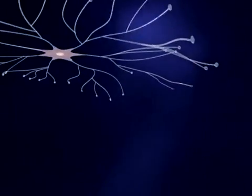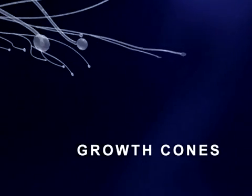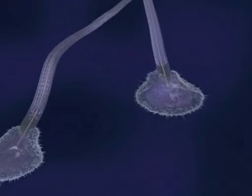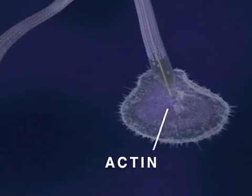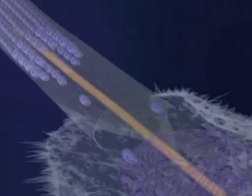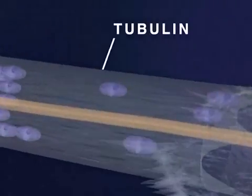At the end of each neurite is a growth cone where structural proteins are assembled to form the cell membrane. Two principal proteins involved in growth cone function are actin, which is responsible for the pulsating motion seen here, and tubulin, a major structural component of the neurite membrane.